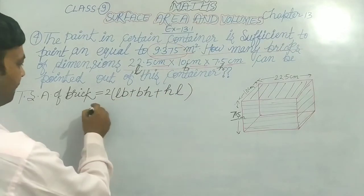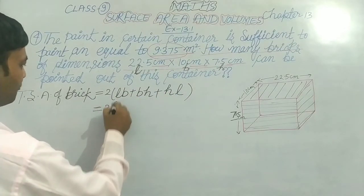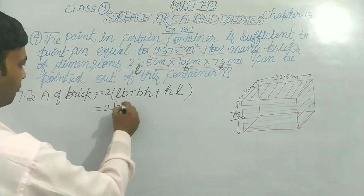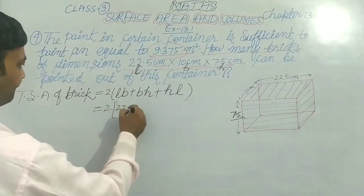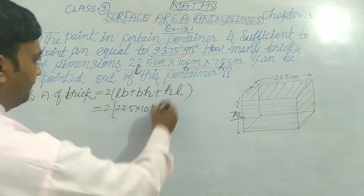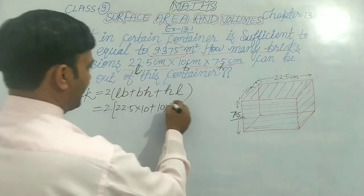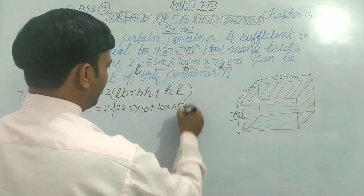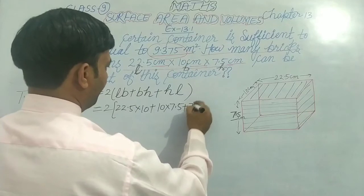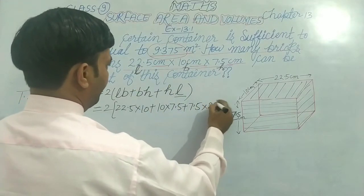We know very well about that. Now here we can put the values: L value we have 22.5, B value we have 10, similarly B value 10 and H value we have 7.5, plus H value 7.5 and the value of L we have 22.5.